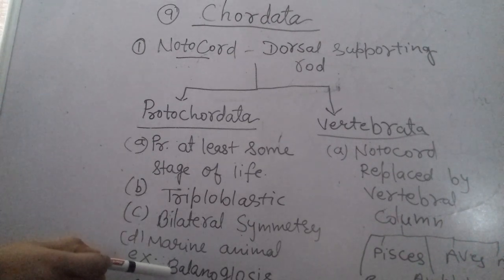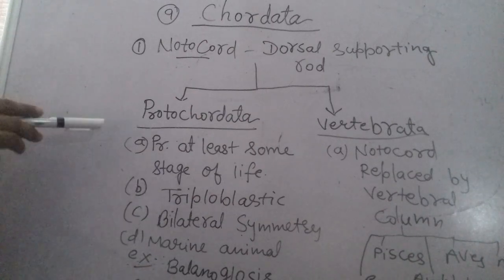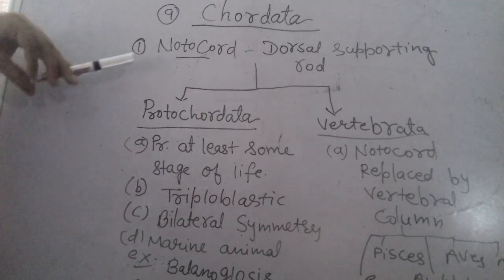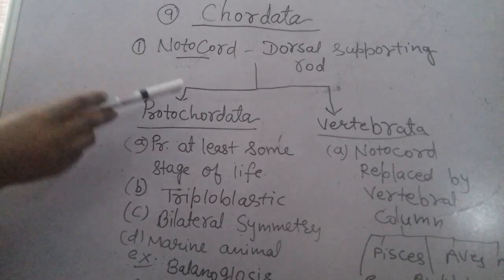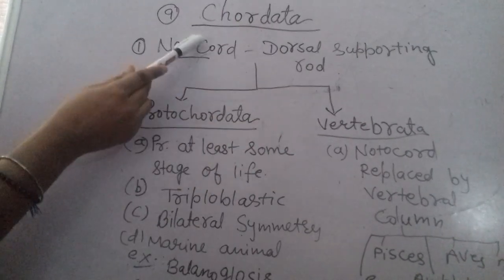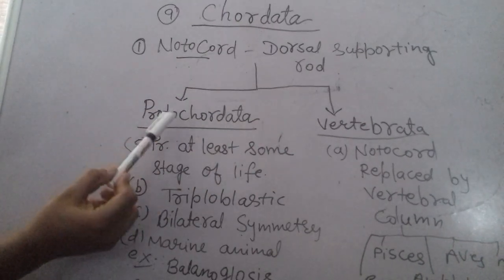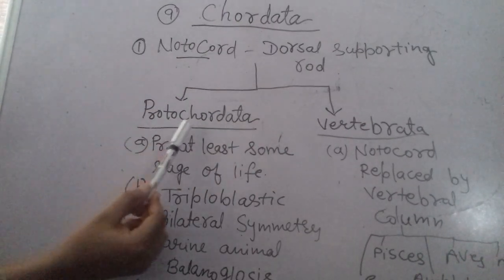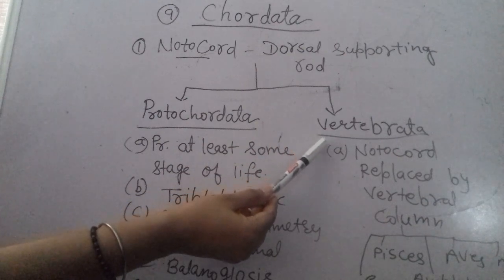An example of Protochordata is Balanoglossus. In Protochordata, the Notochord is present. The Chordata group is divided into two parts: one where only the Notochord is present, and one where the Notochord develops further.